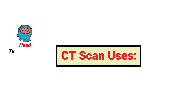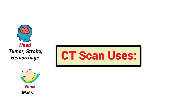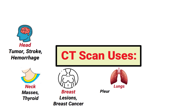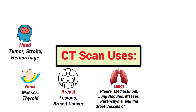CT scans can be performed on the head to look for things like a tumor, stroke, or hemorrhage. They can be performed on the neck to look for masses or to assess the thyroid. A scan can be done on the breast to look for lesions or to detect breast cancer, and on the lungs to assess the pleura, mediastinum, and parenchyma, to look for masses or nodules.